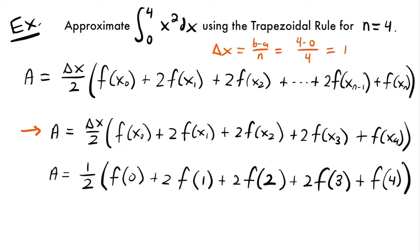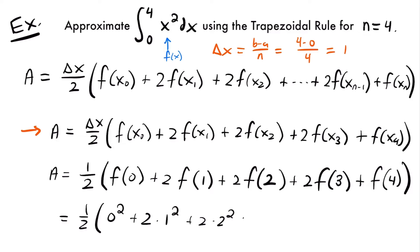To calculate the area, we plug each of these x values into our function. Our function is x squared, which is inside the integral, the integrand. Plugging each value of x into x squared, we get 1 half times 0 squared, plus 2 times 1 squared, plus 2 times 2 squared, plus 2 times 3 squared, plus 4 squared.